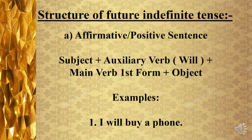Let's discuss the structure of future indefinite tense. We will discuss the structure for making affirmative or positive sentences. If we fail mustakbil mutlik ke saadha jumlai banaanye ho, toh yeh structure follow karte hain: first the subject, then auxiliary verb will, then verb ki pehli form, and finally the object. For example: I will buy a phone.